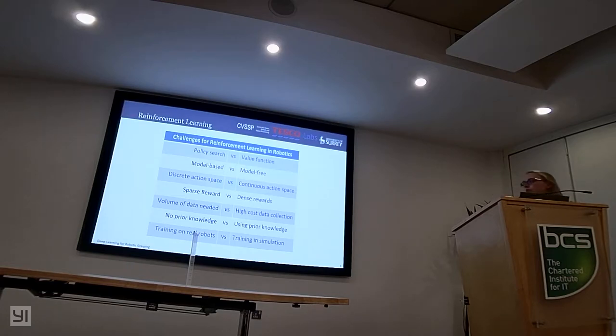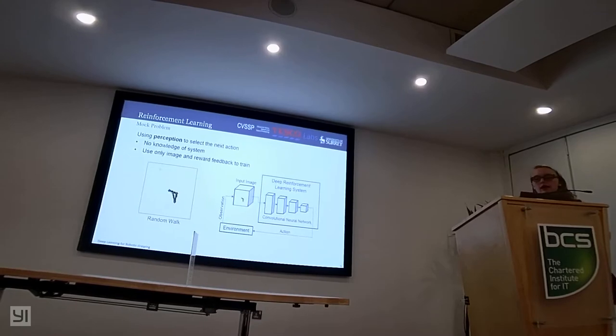With all these challenges in mind, we aim to use perception. Starting with just taking in images, not taking in data such as the states of where the goal is, or where the arm is, because we don't have access to that information accurately. We want to use visuals or RGB images to select the next action. We start with this really simple problem doing random walking. We use a deep reinforcement learning system to predict action and feed that back into the environment so that we can then get an observation continuously.